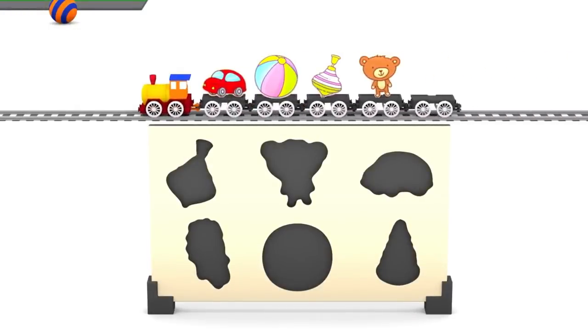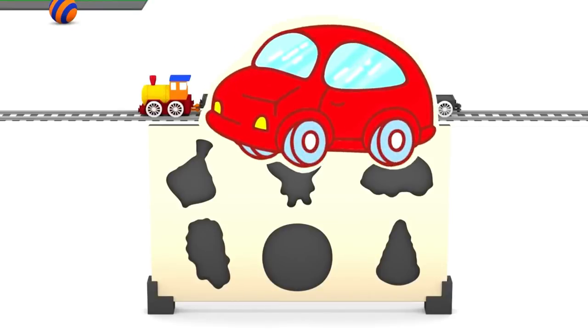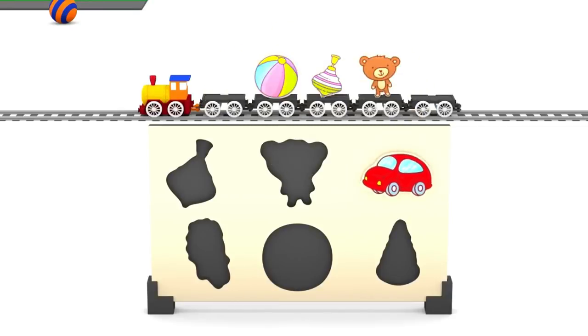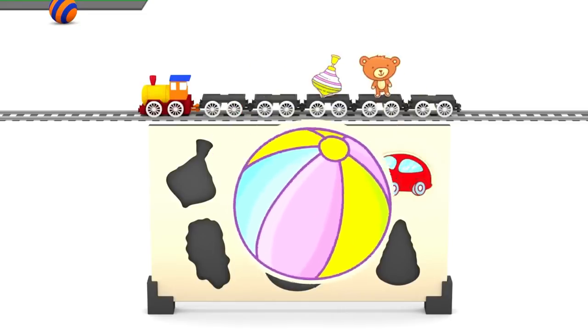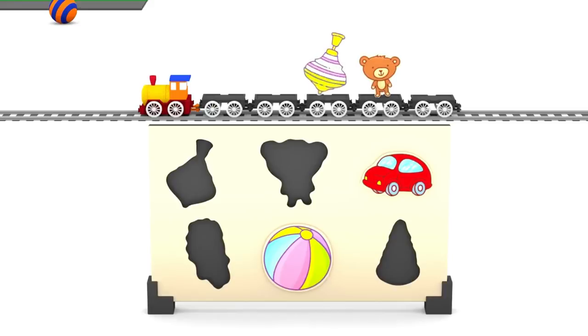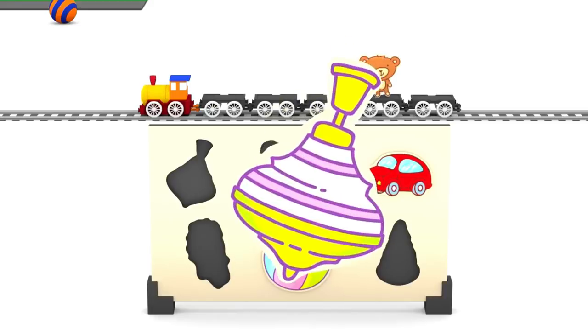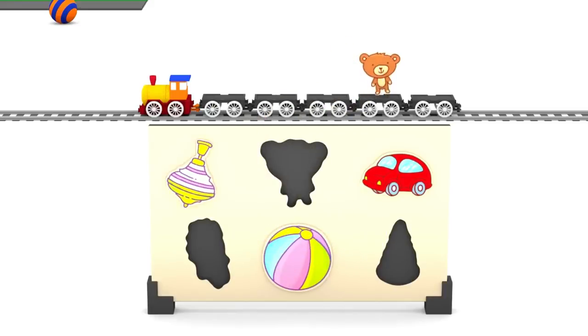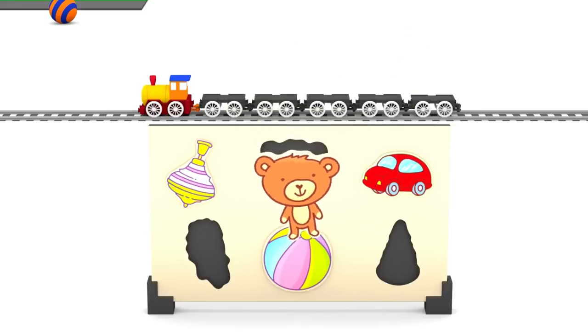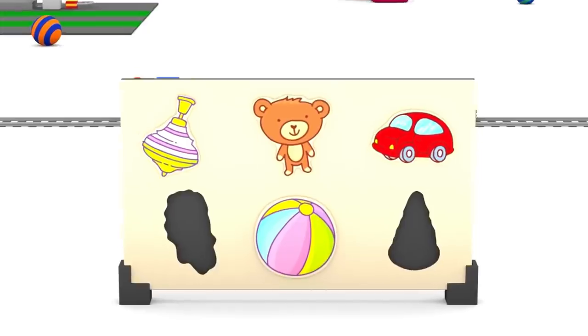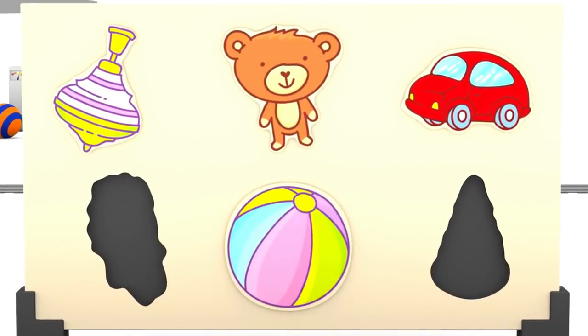Let's put all the pieces into the correct places. The car, the ball, the spinning top, the bear. Ah, we need two more pictures, don't we?